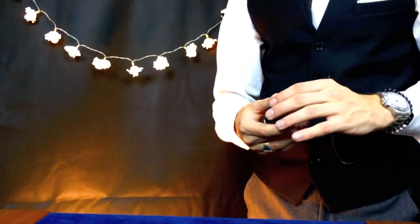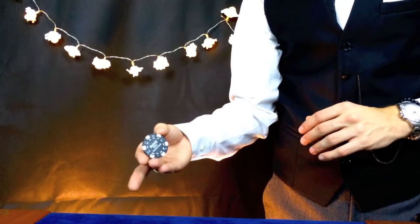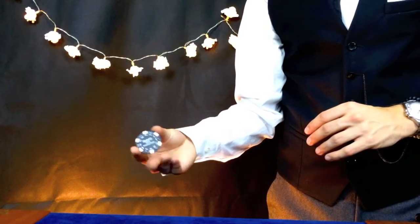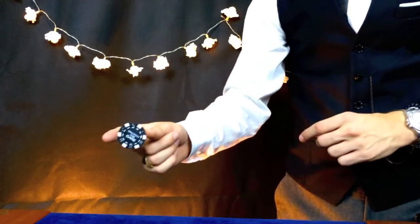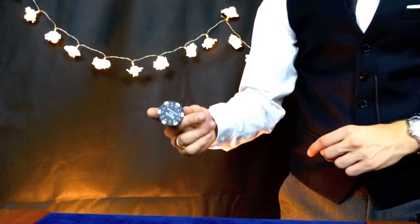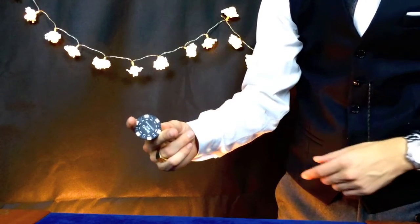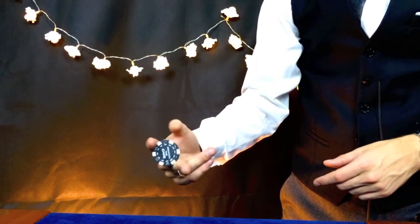Alright, so every part of this trick revolves around these movements. So what we'll do is we'll start with one chip in between your index finger and your thumb. Your middle finger is just going to go and pinch your thumb there, and it's going to take the chip away.